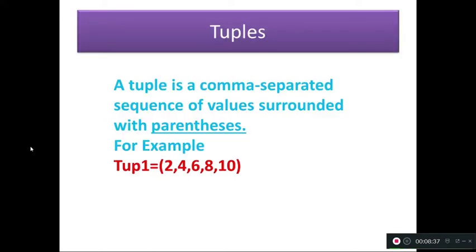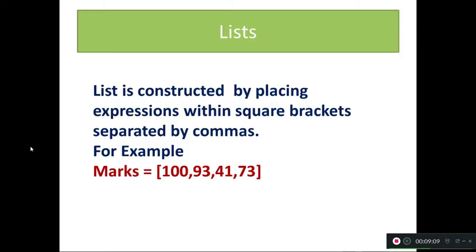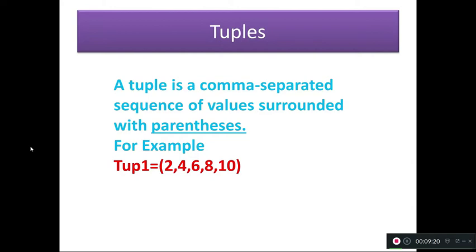And then tuple. What is a tuple? A tuple is a comma-separated sequence of values surrounded by parentheses. For example, tuple1 is a variable with values 2, 4, 6, 8, 10 — five numbers — within parentheses, meaning within brackets. Anything in parentheses we call a tuple. What is the difference between list and tuple? A list has values separated by commas within square brackets. If you mention anything in parentheses, that is the main difference — it is a tuple.